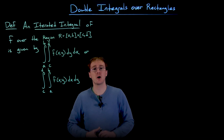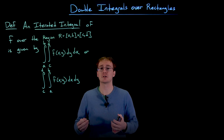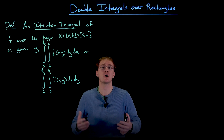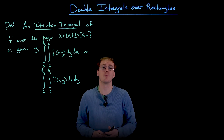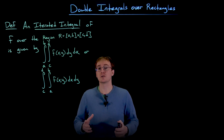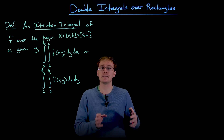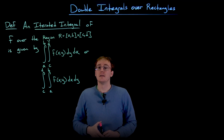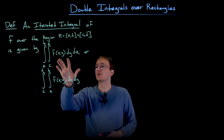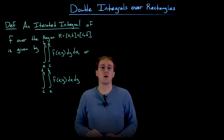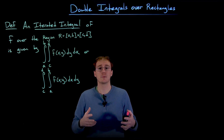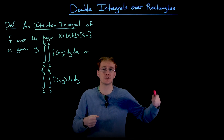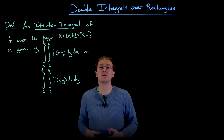These iterated integrals will help us evaluate double integrals algebraically using antiderivatives, and the process is similar to what we did with partial derivatives for multivariable functions. For partial derivatives we treated one variable as constant and did all the work with the non-constant variable — something similar happens here. We take an x value, fix it as a constant, similar to how with double Riemann sums we fixed the outer sum and ran through the inner sums loop.